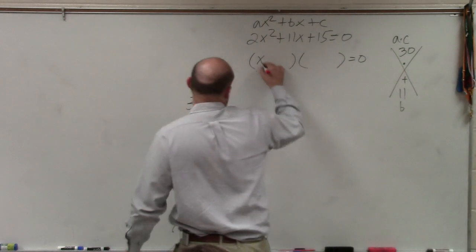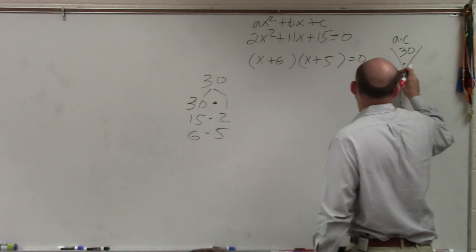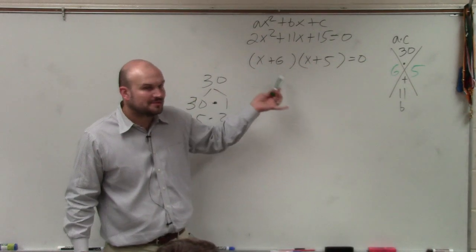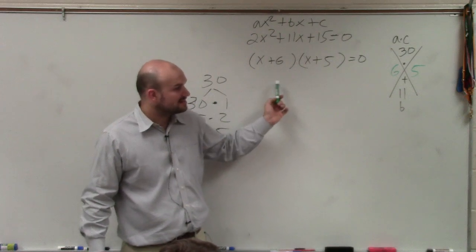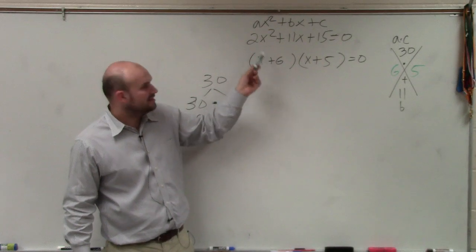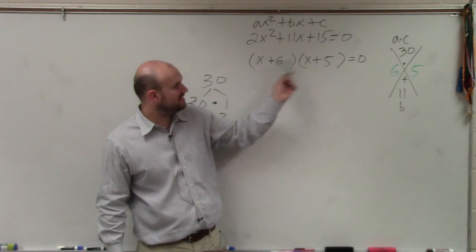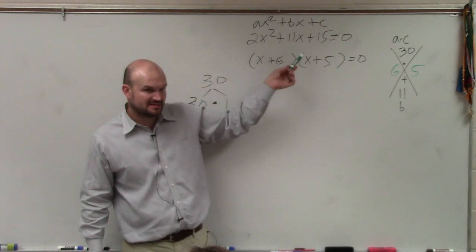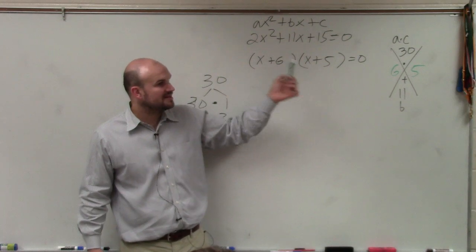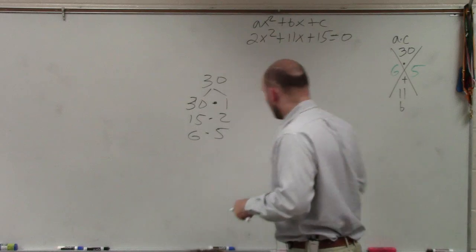Now, the mistake that students make is they say, oh, 6 and 5, that's going to be the two quadratics. Remember what I said at the beginning. This is incorrect because these first two terms have to multiply to give us 2x squared. x times x gives us x squared. And 6 times 5 gives us 30. This multiplied out does not give us this. So when you just quickly plug it into the binomials, that only works when a is equal to 1. Just a very common mistake.